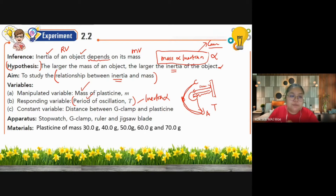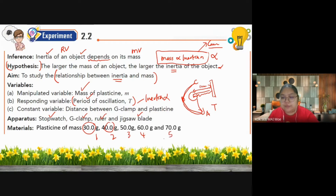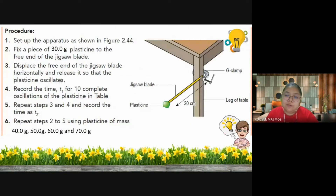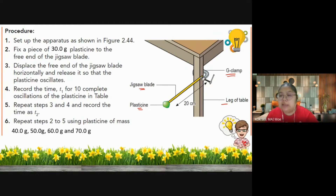Apparatus needed: stopwatch to measure time, G-clamp, meter rule to measure distance, hacksaw blade. For materials, you need at least five sets of plasticine with different masses - for example 30, 40, 50, 60, 70 grams. The diagram is very important. When you draw, please label it so we know what you have drawn. Label the distance between the clamp and the plasticine - this must be constant.